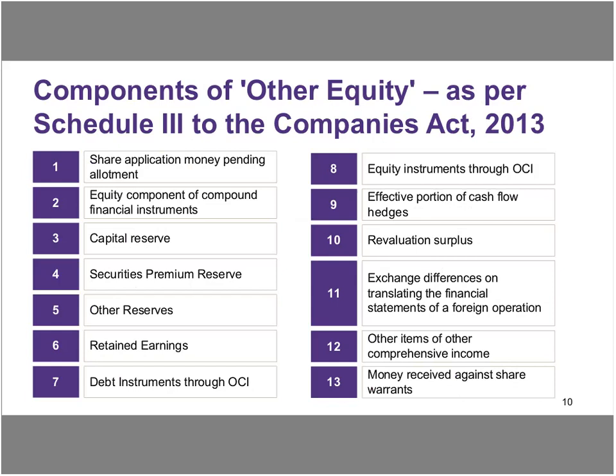Other equity is another component of equity which has been introduced by Schedule 3 to the Companies Act 2013. Essentially, there are 13 prescribed items within other equity. Of course, India's is a principles-based standard, and one could create more line items — covered in point number 5 as other reserves. The preparers of the financial statements are free to bifurcate that item number 5 into further subheadings if they wish to. There are 13 broad components that have differing impacts from a MAT perspective, as the tax authorities have tried to bring them within the purview of tax depending upon each item's nature.